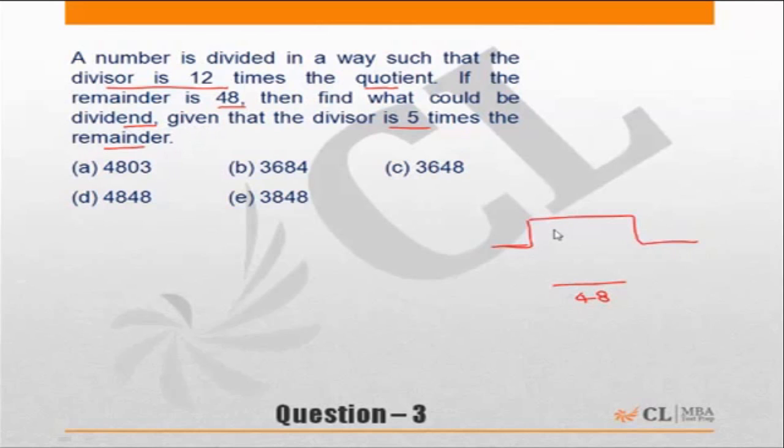Dividend is the number which has been divided. Given that the divisor is 5 times the remainder, so the divisor is 5 times the remainder, 48 into 5 is 240. So the number is being divided by 240.